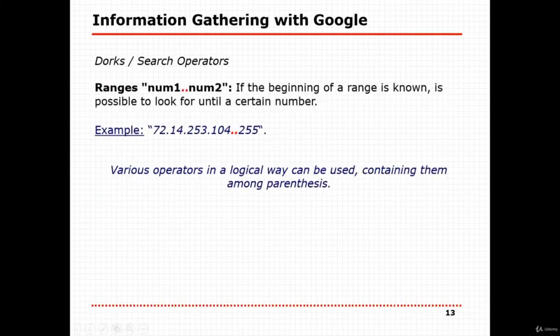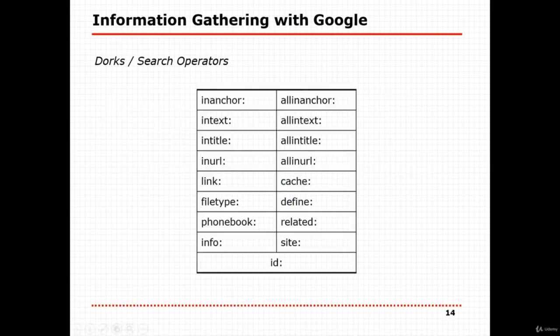Number ranges: you can type in any IP range or number range and get related results. Other important direct search operators include: 'inanchor,' 'intext,' 'intitle,' 'inurl,' 'link,' 'filetype,' 'cache,' 'info,' and 'site.' Each of these lets you filter Google results in specific ways. For example, 'intext' searches for a keyword within the text content of a page.